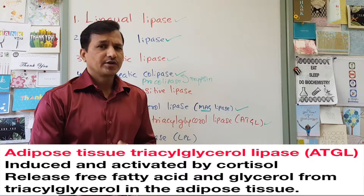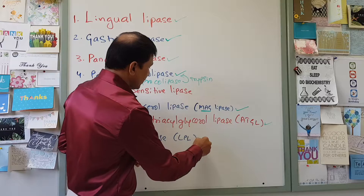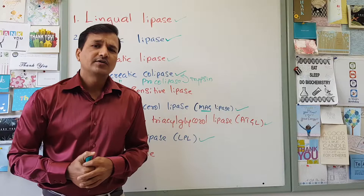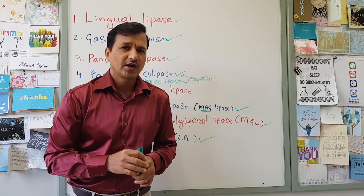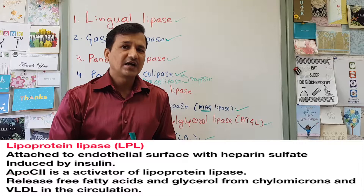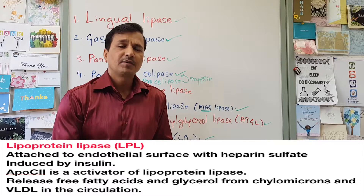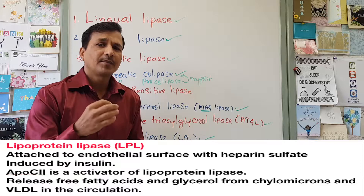Our next lipase is lipoprotein lipase. Lipoprotein lipase breaks down triacylglycerol present in lipoproteins, especially chylomicrons and VLDL, both of which are rich in triacylglycerol. The triacylglycerol in chylomicrons and VLDL is broken down into free fatty acids and glycerol. Lipoprotein lipase is present on the endothelium of blood vessels, attached with the help of heparan sulfate — making it an endothelial membrane-located enzyme.